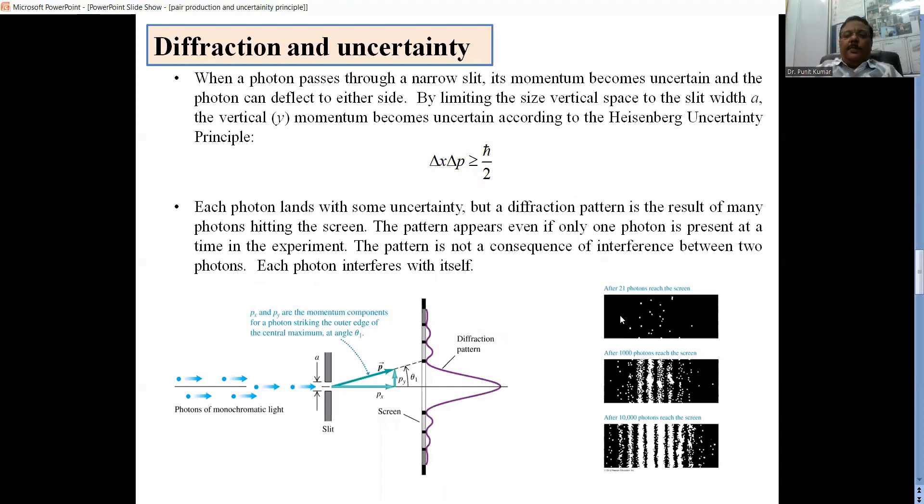Now we come to the principle of uncertainty. It was postulated that when a photon passes through a narrow slit, its momentum becomes uncertain and the photon can be deflected on either side. The exact position where it will be deflected is not known. Heisenberg accounted this in terms of uncertainty and postulated that the exact position and exact momentum of the particle cannot be known simultaneously at the same instant.